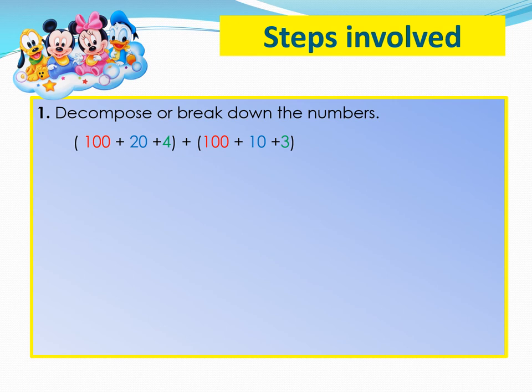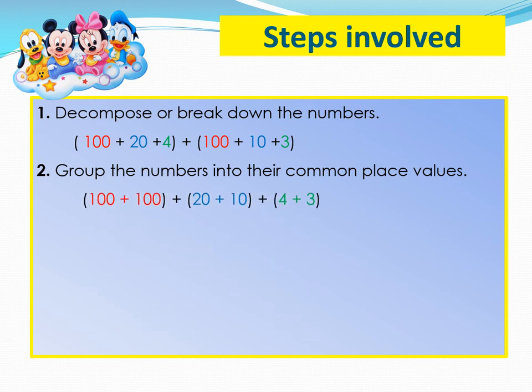Step number 2. Group the numbers into their common place values. In the first bracket, we have the hundreds together. 100 plus 100. In the second bracket, we have all the tens together. 20 plus 10. And in the last bracket, we have the units together. 4 plus 3.